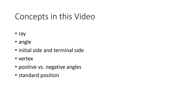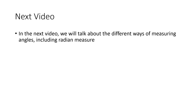To review what we talked about in this video: we've defined the words ray and angle, talked about the initial side and terminal side of an angle, defined vertex, talked about angles being positive or negative, and talked about angles being in standard position. In the next video we're going to start talking about ways of measuring angles — specifically we'll define radian measure of angles, which is something that trips some people up, so if you're confused about radians take a look at the second video in this series.